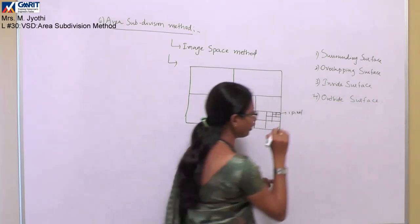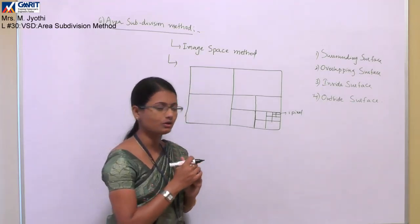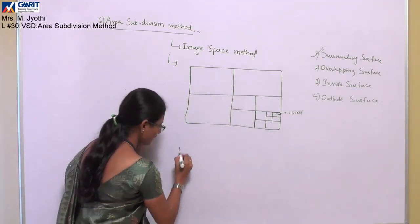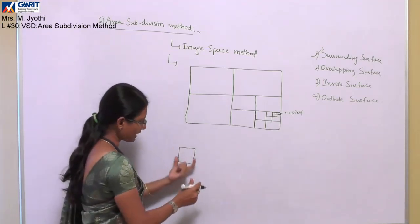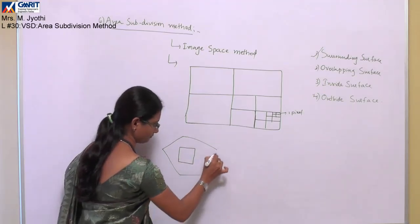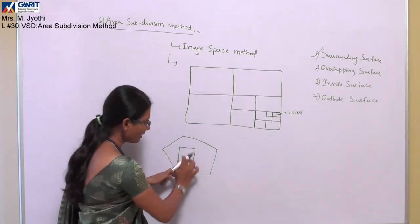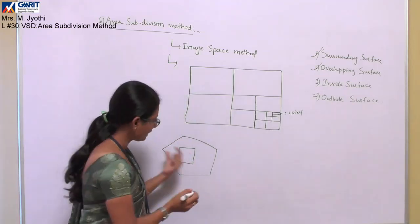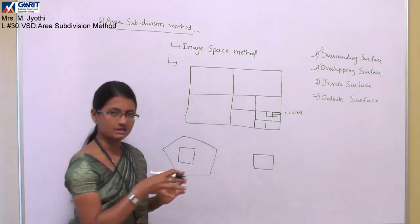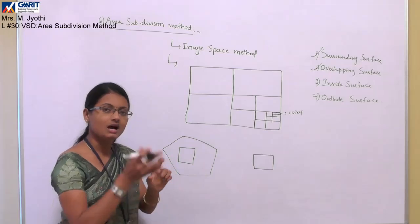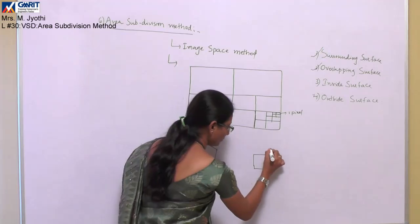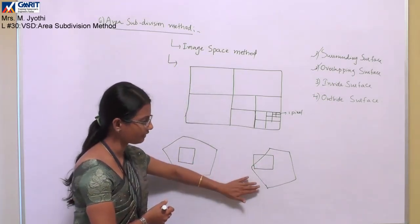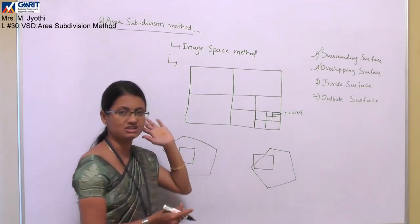These surface types help identify whether a particular area is overlapped by any surface. A surrounding surface means the entire area of division is surrounded by a polygon — the complete area is enclosed within the polygon. An overlapping surface means the area contains only part of the surface — some part is inside the area and some part is outside, so the surface partially overlaps the area.